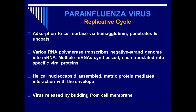The replicative cycle of the parainfluenza virus is exactly similar to that of measles, mumps, and respiratory syncytial virus. There is adsorption of the virus to the cell surface via hemagglutinin receptors, then penetration into the cell, and uncoating. When the virus uncoats, the capsid is opened, the viral genome is released, and the virus then reaches the viral genome.